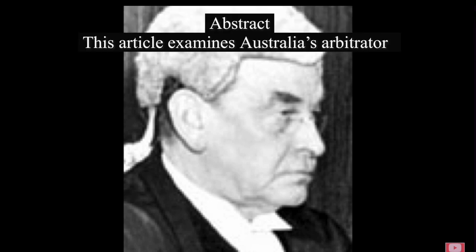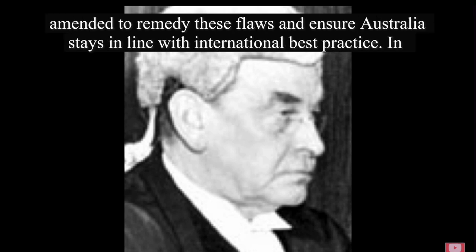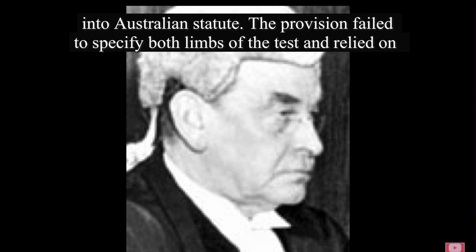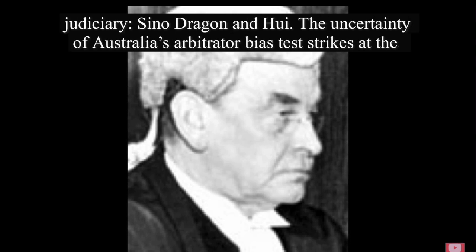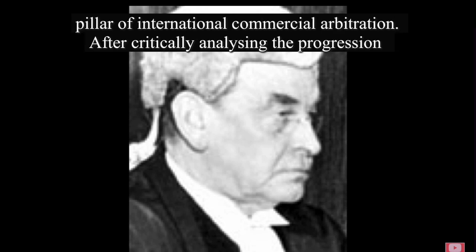Abstract. This article examines Australia's Arbitrator Bias Test to reveal its underlying contradictions and ambiguity, and suggests that the legislation is amended to remedy these flaws and ensure Australia stays in line with international best practice. In 2010, Section 18A of the International Arbitration Act 1974 (CTH) introduced the Arbitrator Bias Test into Australian statute. The provision failed to specify both limbs of the test and relied on Gough, an outdated English case. This produced two opposing decisions from Australia's Federal Judiciary: Sino Dragon and Hui. The uncertainty of Australia's Arbitrator Bias Test strikes at the heart of the process, as the independence and impartiality of arbitrators is a fundamental pillar of international commercial arbitration.